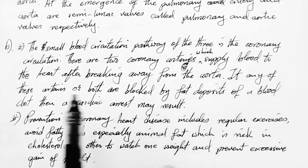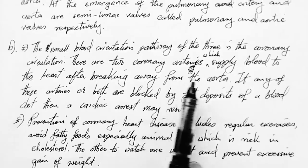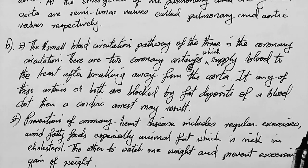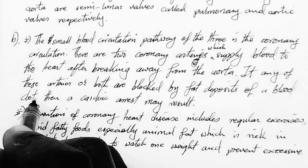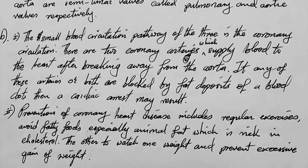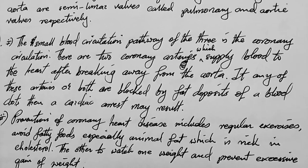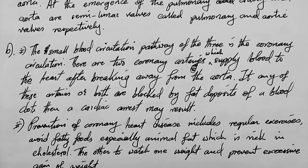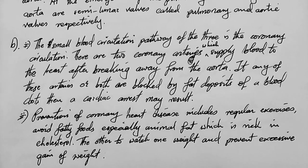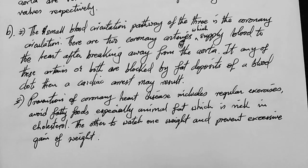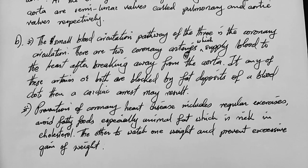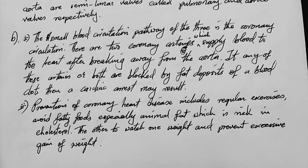The two coronary arteries supply blood to the heart after breaking away from the aorta. If any of these arteries or both are blocked by fat deposits or blood clots, then a cardiac arrest may result. This is referred to as coronary heart disease. Cardiac arrest may not happen at once — it can be prolonged, with symptoms over days or a week — the reason being accumulation of fat or a blockage somewhere within the coronary arteries.